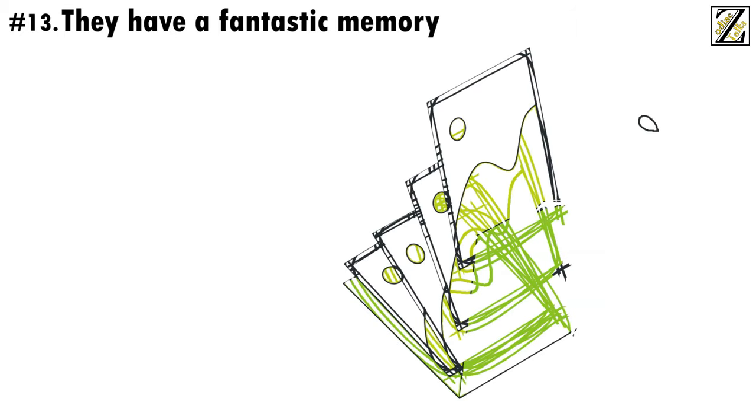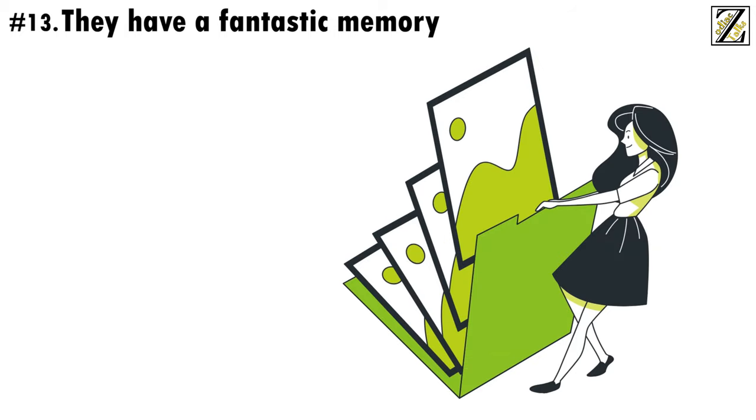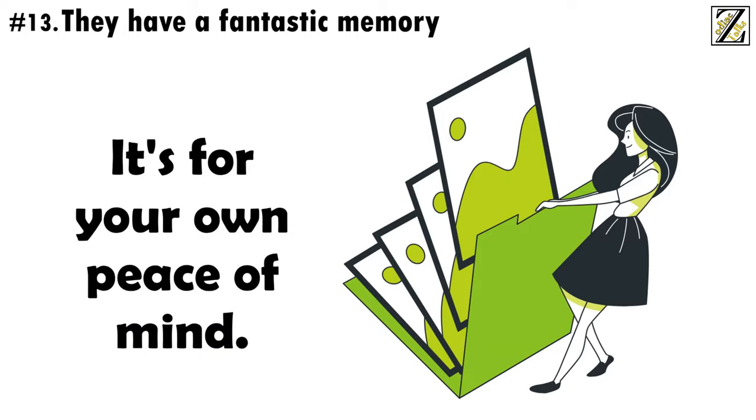Number 13. They have a fantastic memory, and they're not afraid to use it against you, bringing up past arguments and mistakes you've made to back up their claims. Try not arguing with a Cancer. It's for your own peace of mind.